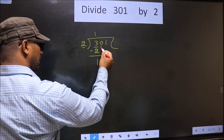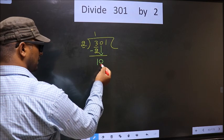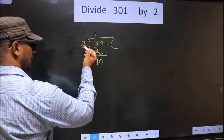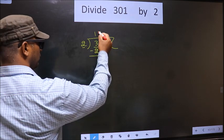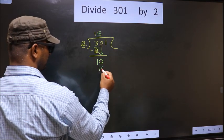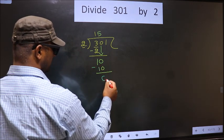Now you bring down the beside number. That is 0 down. Now here we have 10. Here 2. When do we get 10 in 2 table? 2, 5, 10. Now you subtract. 10 minus 10, 0.